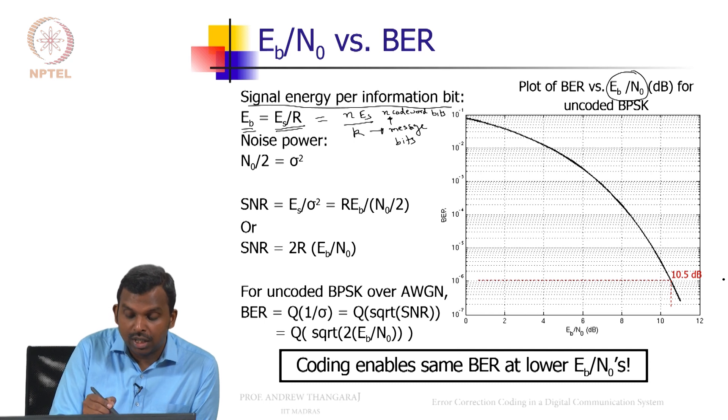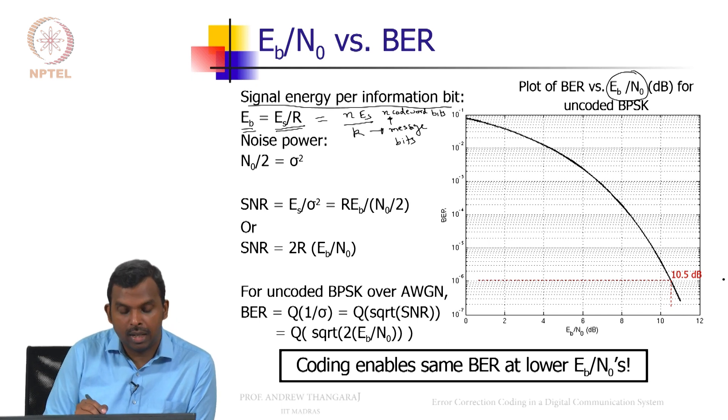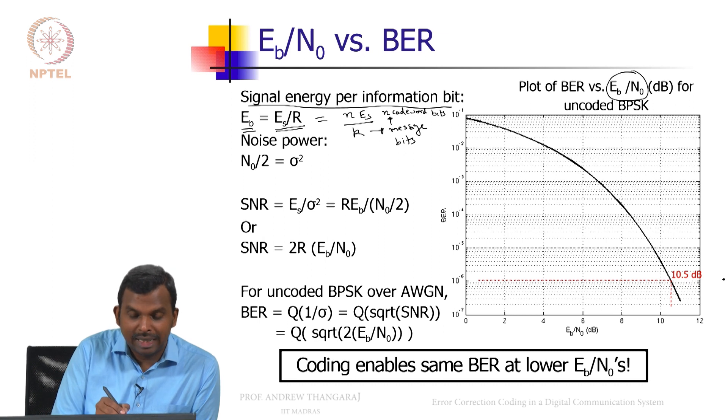So Eb is actually the energy per information bit. N times Es is the total energy consumed for k information bits. For one information bit, you consume an energy of N times Es divided by k and that is Eb.